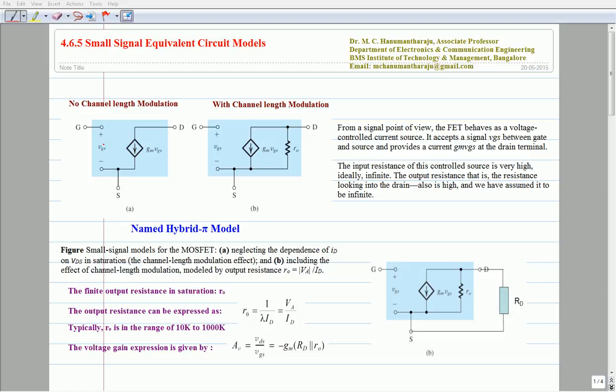The gate source voltage is labelled as small vgs and the drain current flowing is labelled as gm times vgs. The input resistance of this controlled source is very high since the gate current is zero. Ideally speaking, the resistance looking into the gate and source of the MOSFET is infinite.